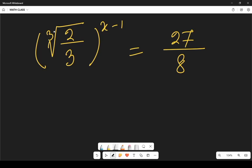In this video we have to evaluate cube root of 2 by 3 whole to the power x minus 1 is equals to 27 divided by 8.